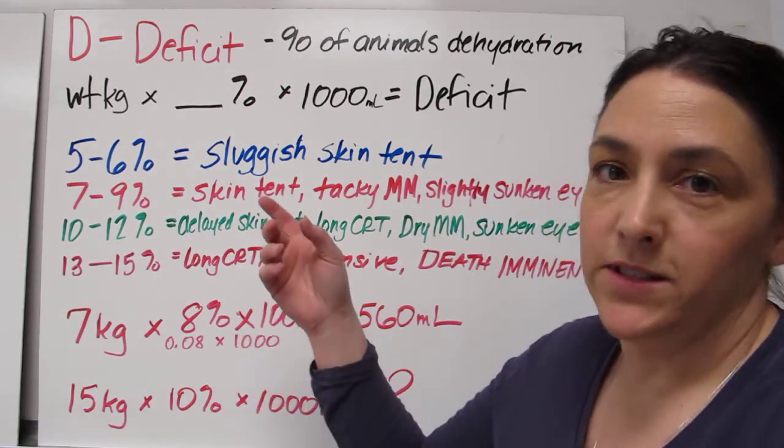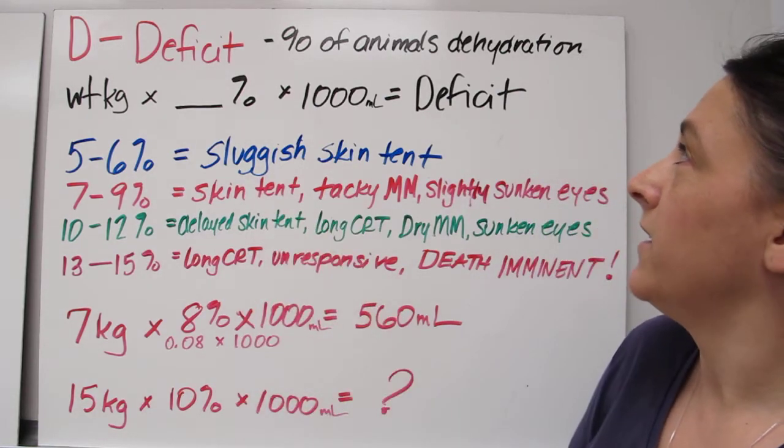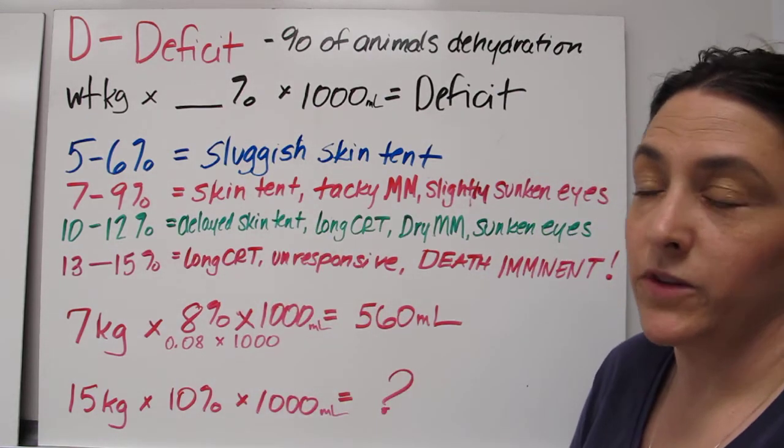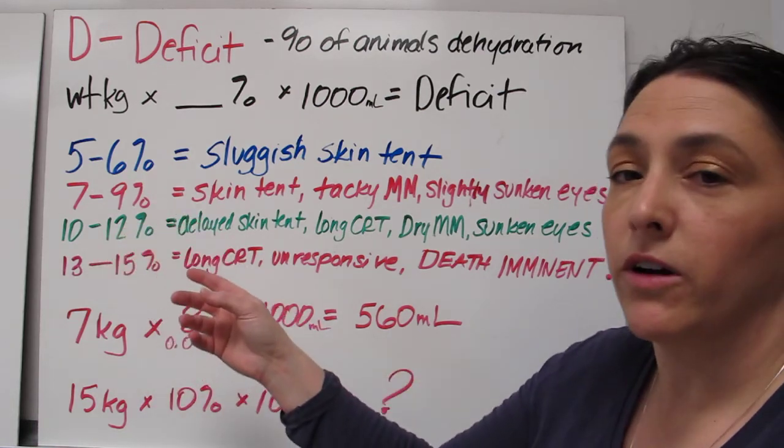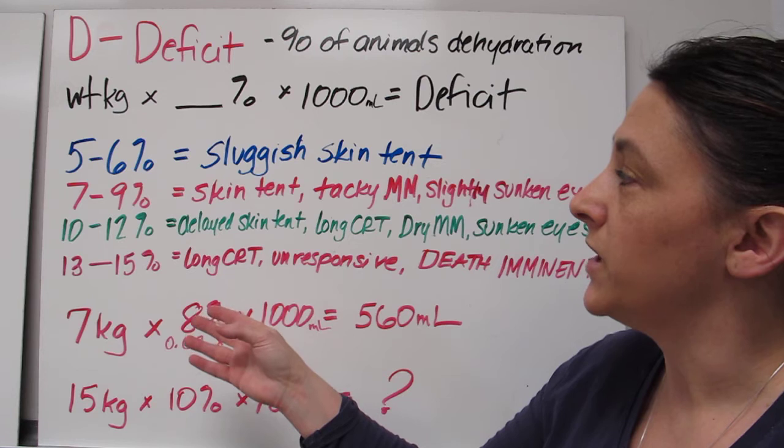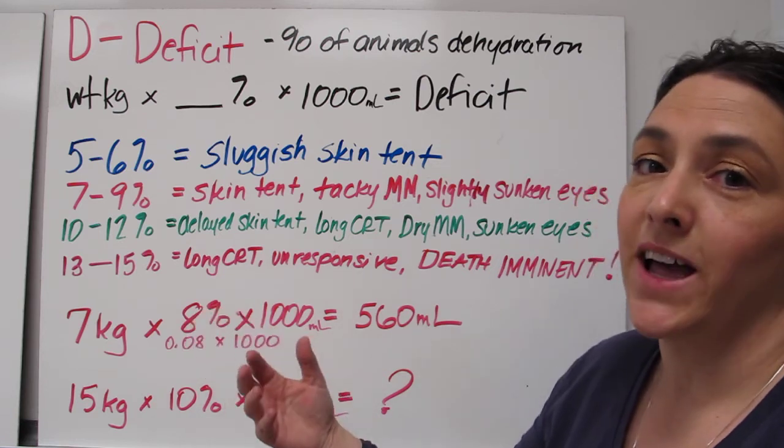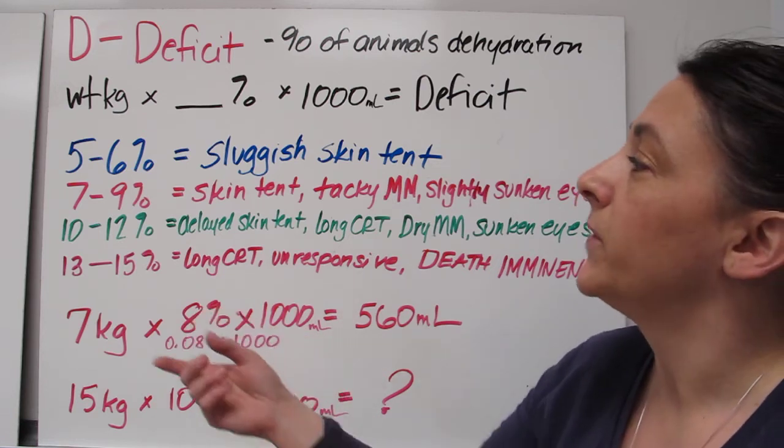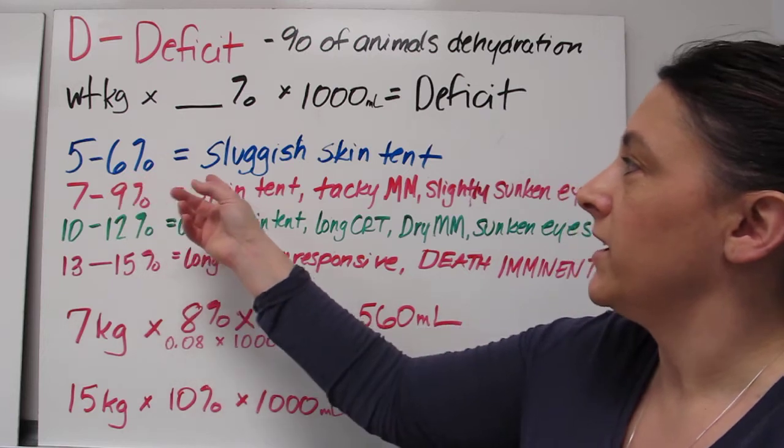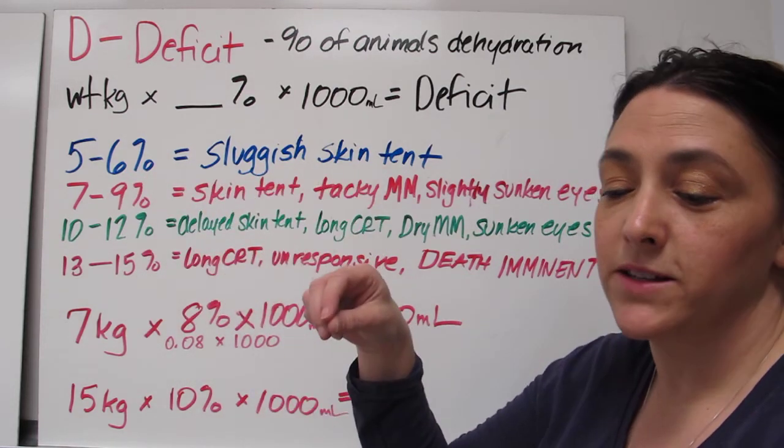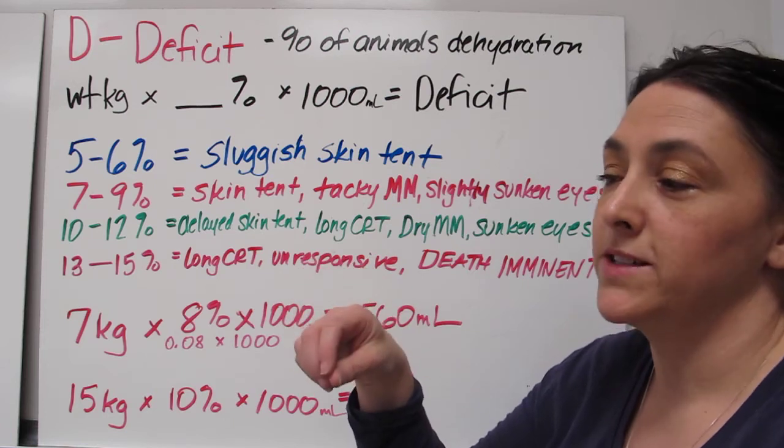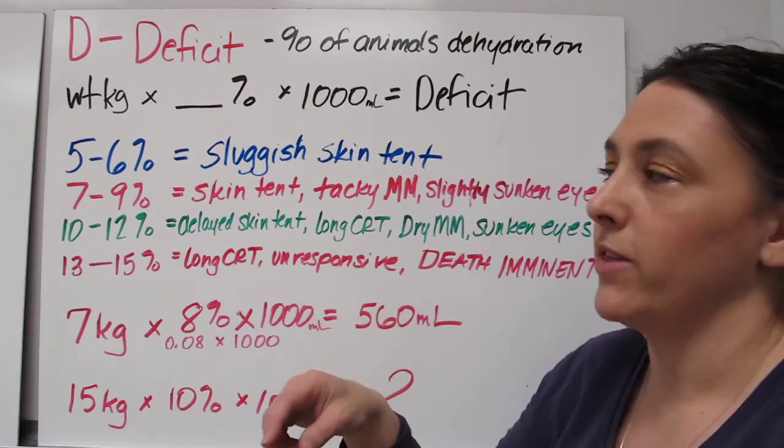So let's talk about deficit. Deficit is the percent of the animal's dehydration. We think about the dehydration and there are numbers that we use to subjectively decide how dehydrated they are. So 5 to 6 percent, these are sluggish skin tent. So when you lift the skin up over the shoulder blades, it goes down but it goes down rather slowly.